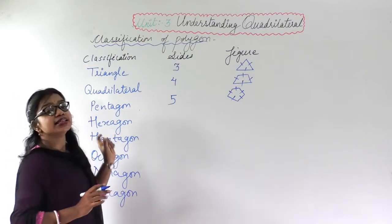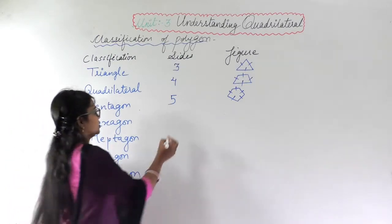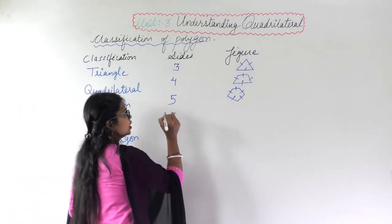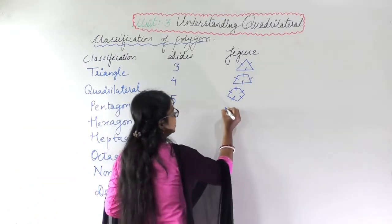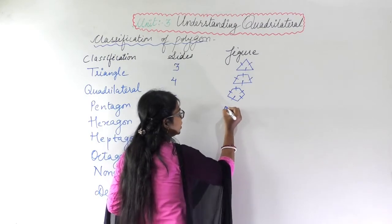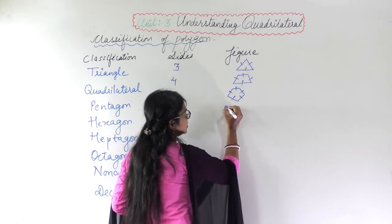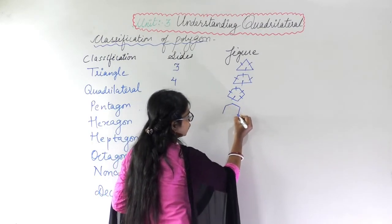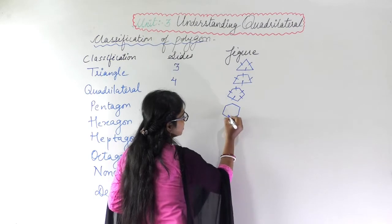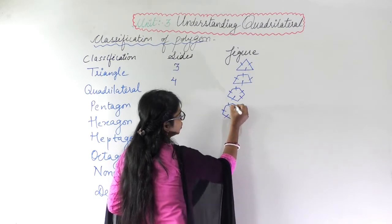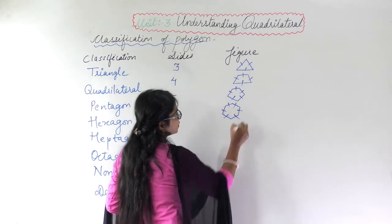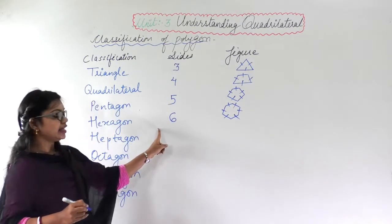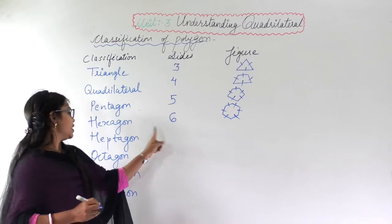Similarly, 'hexa' means six. So the polygon made with six sides — one, two, three, four, five, six. This is a hexagon having six sides.